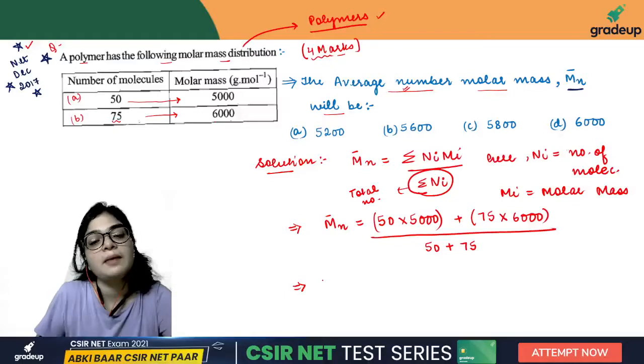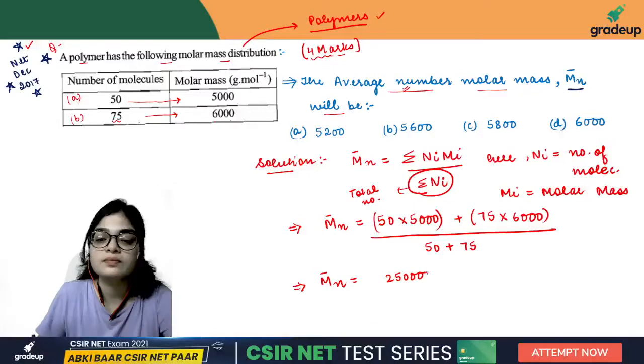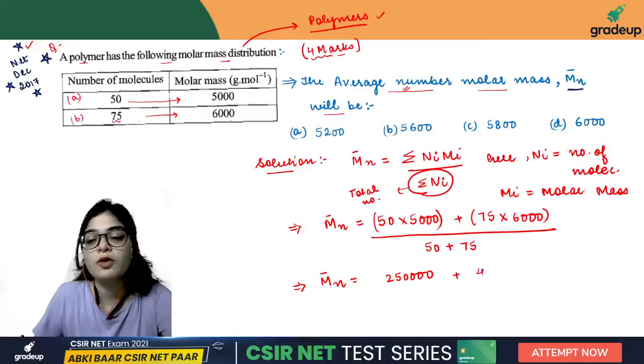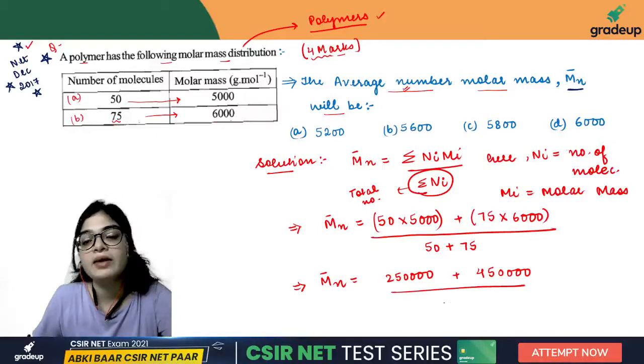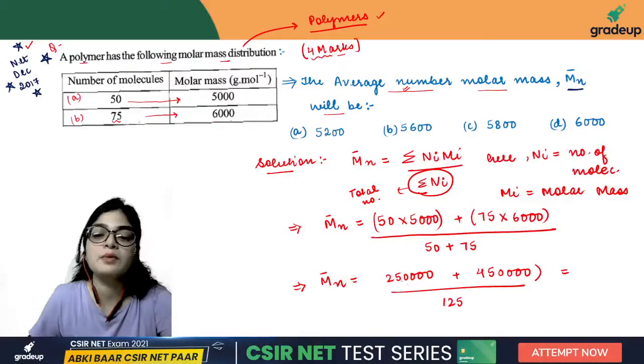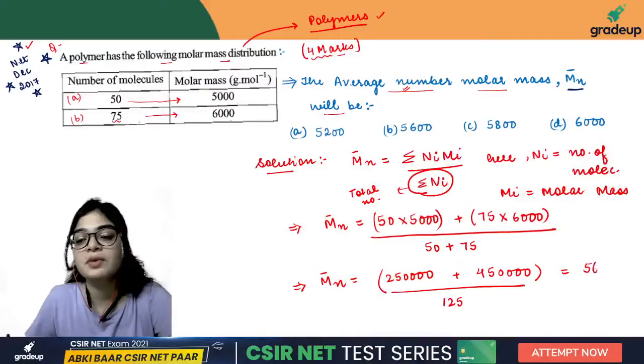Now simple mass calculation. The first value will be 2,50,000 and the second value will be 4,50,000. Divided by 125, when you solve and add this, the answer will be 5600.